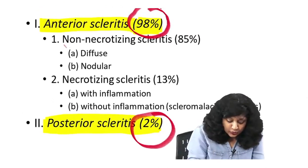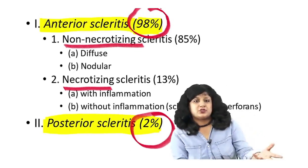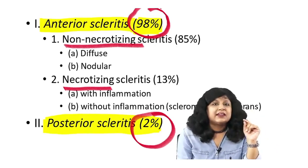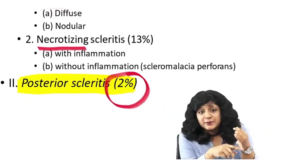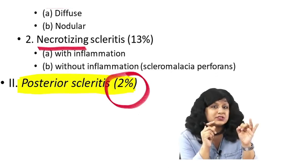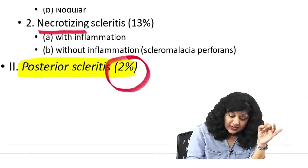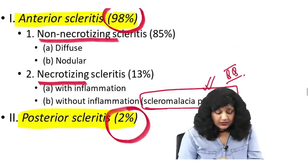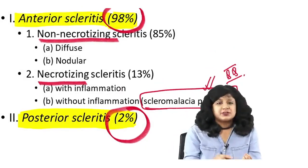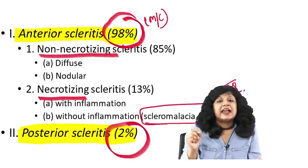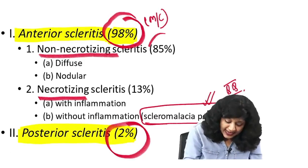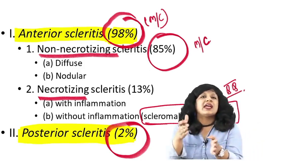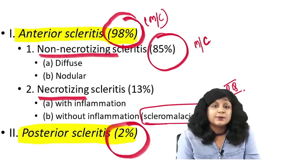Anterior scleritis can again be divided into non-necrotizing and necrotizing. Necrotizing means ulceration. In non-necrotizing, same as episcleritis, one can be diffuse and another nodular. In the necrotizing, we have one with inflammation and one without inflammation — the one without inflammation is called scleromalacia perforans. Looking at the ratio: 85% is non-necrotizing, so this is more common. That means non-necrotizing anterior scleritis is the most common type overall.